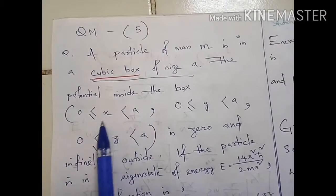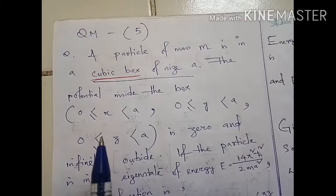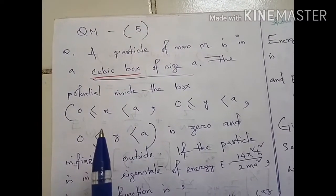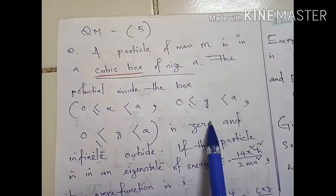The size along x direction is a, along y direction is a, and along z direction is also a, so it's a cubic box. And what they said is inside the cubic box the potential is zero and outside is infinite.